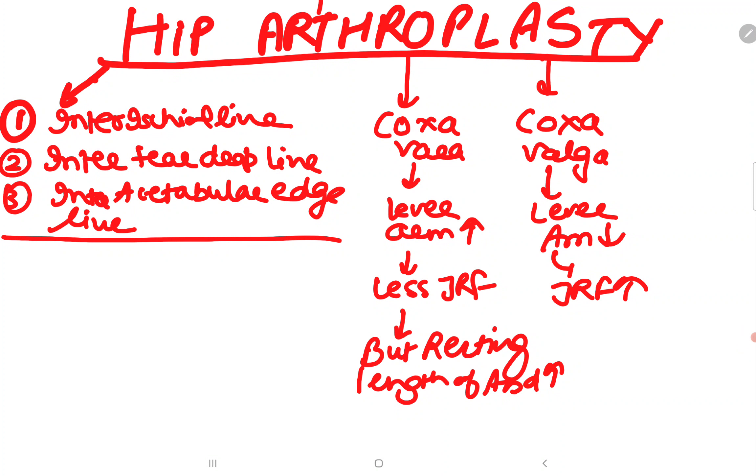Firstly in the pre-operative templating, you will see the inter-ischial line. The inter-ischial line is a line connecting the ischial tuberosities of both sides. Then you will mark the inter-teardrop line. Then you will mark the inter-acetabular edge line. You will connect the both acetabular edge and draw a line. If there is equal difference in between the inter-acetabular and inter-teardrop line, that means there is no problem at the acetabular side.